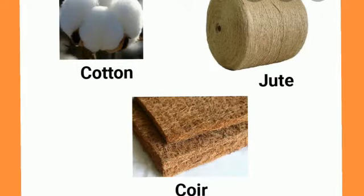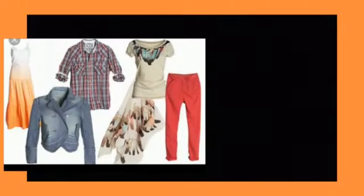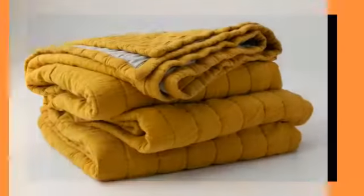Some common plant fibers are cotton, jute, and coir. Cotton is a soft fluffy fiber that grows as a protective case around the seeds of a cotton plant, so cotton is obtained from the seeds of the cotton plant. It is commonly used in making clothes, bed sheets, curtains, bandages, and quilts.